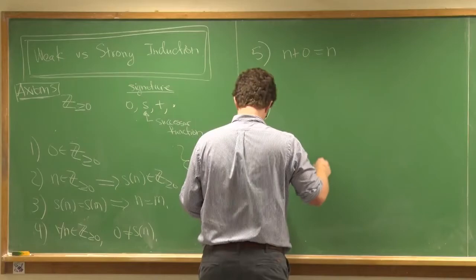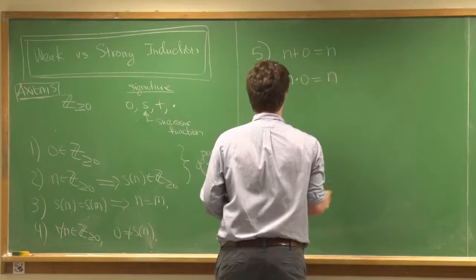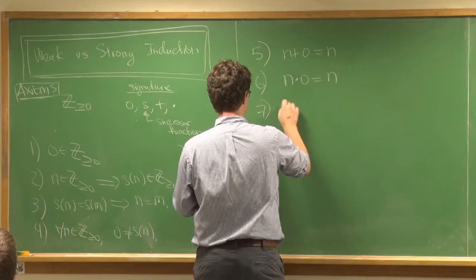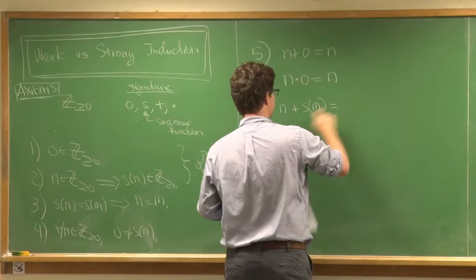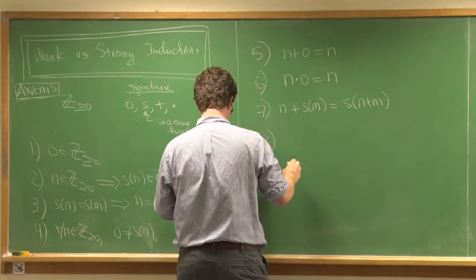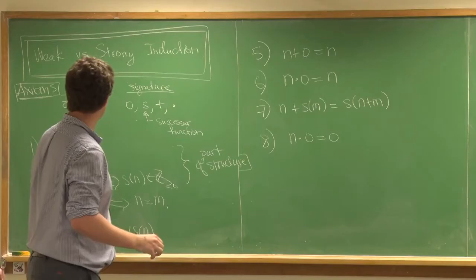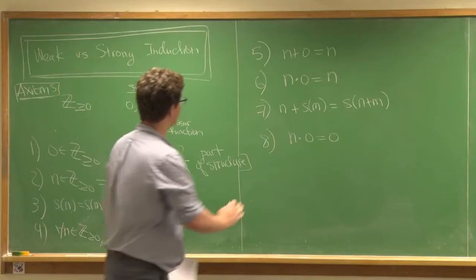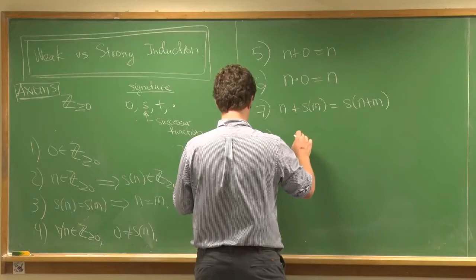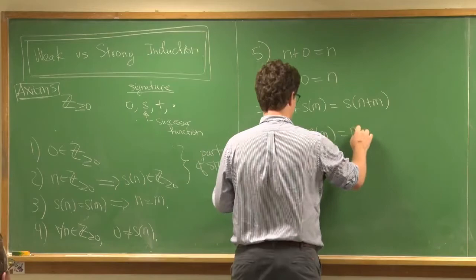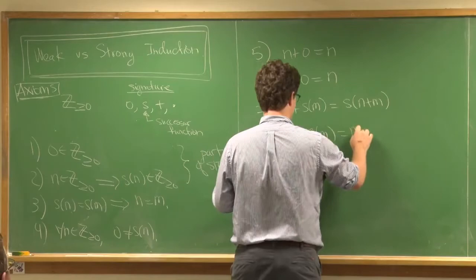Axiom six is that N times zero is equal to zero. The next one is that N plus S(M) — so when you add a successor — that's the same thing as the successor of N plus M. And then there's axiom eight, a distributive rule: N times S(M) is equal to N times M plus N. So we have these eight axioms now.